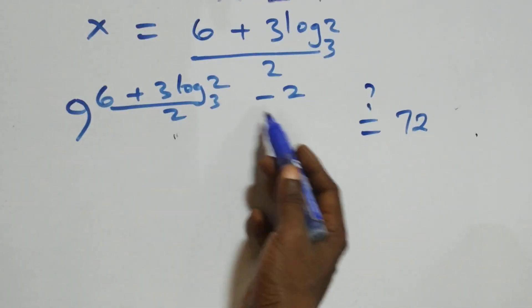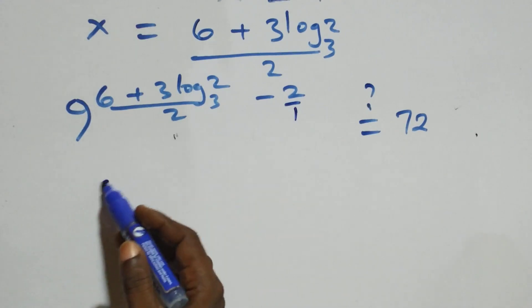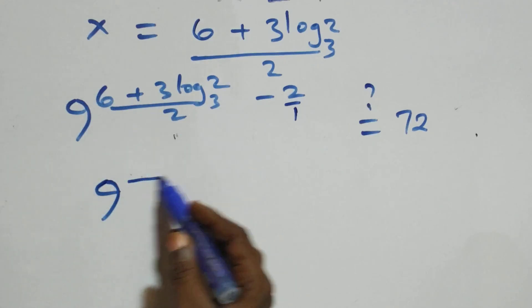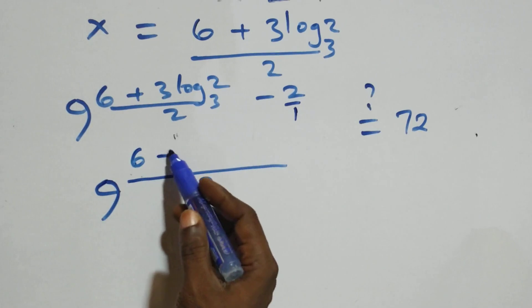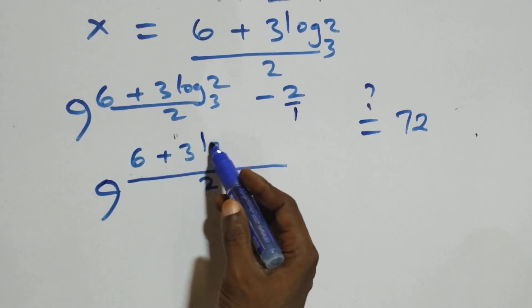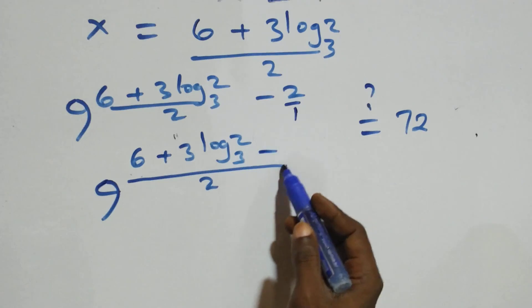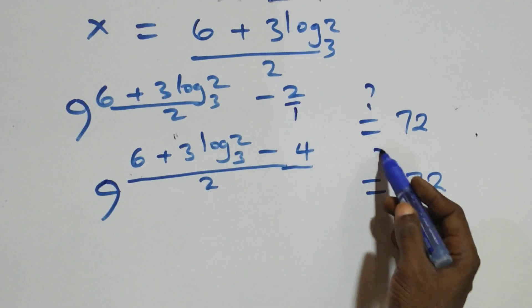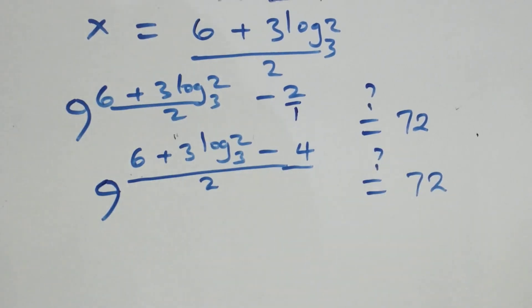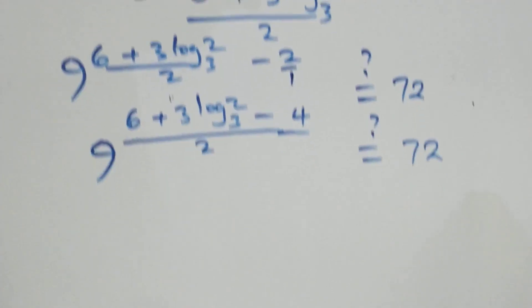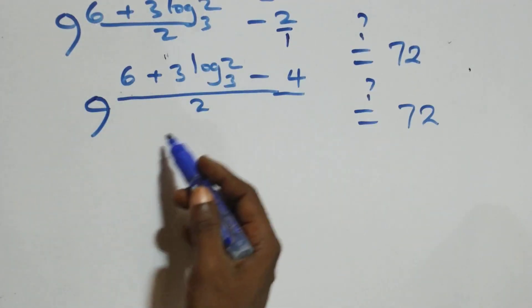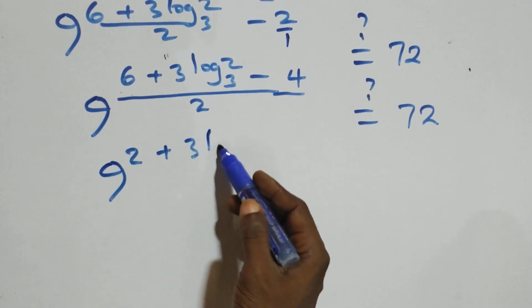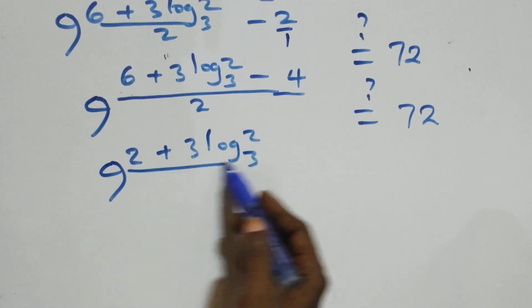We can bring the power together as one. The denominator 2 comes out, giving 9 raised to power (6 + 3·log₃ 2), divided by 9 raised to power 2, which is 9 raised to power (6 + 3·log₃ 2) minus 4, equal to 72. With 6 minus 4 giving 2, we have 9 raised to power (2 + 3·log₃ 2) equal to 72.